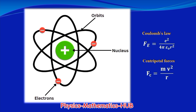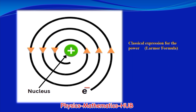In the classical model, an electron moves in a circular orbit around a proton, just like a planet orbits the sun. The force keeping the electron in orbit is the centripetal force, which is actually the electrostatic attraction between the proton and the electron — acting like gravity in the solar system. But in classical mechanics, a charged particle moving in a curved path must emit electromagnetic radiation, meaning the electron is constantly losing energy. The rate of radiated energy is given by the Larmor formula.